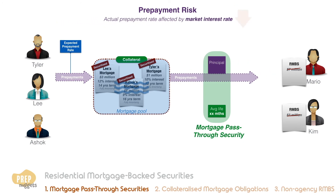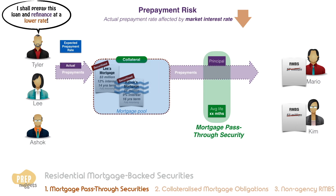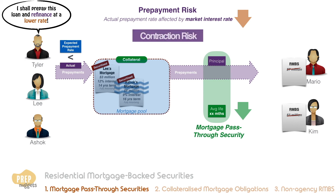If market interest rates fall such that the borrowers can refinance at now available lower interest rates, actual prepayments will be higher than forecasted. Thus, the security will have a shorter maturity than was anticipated. This is known as contraction risk.